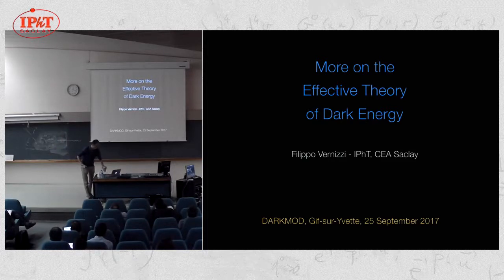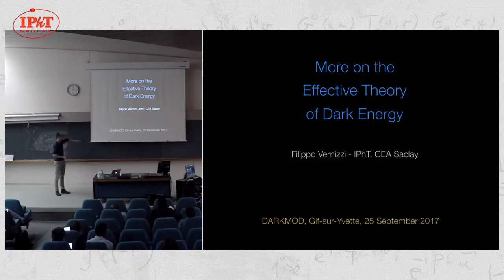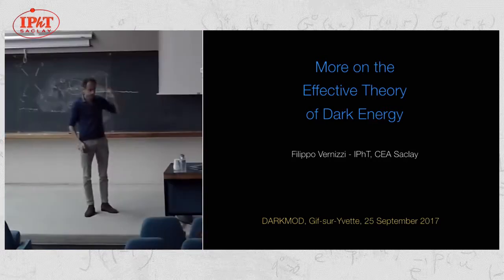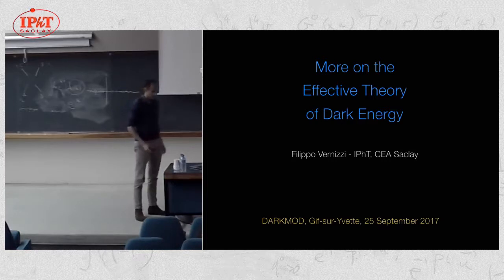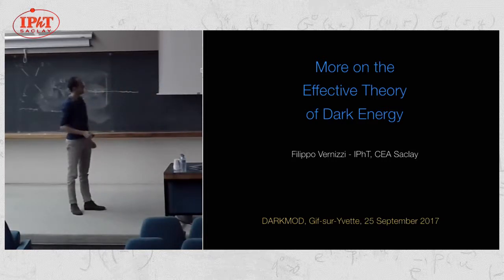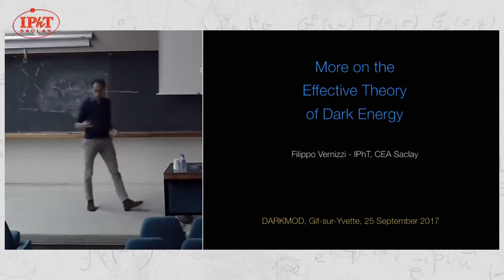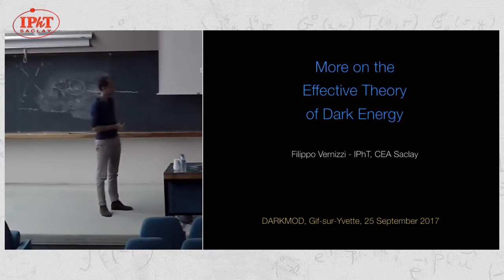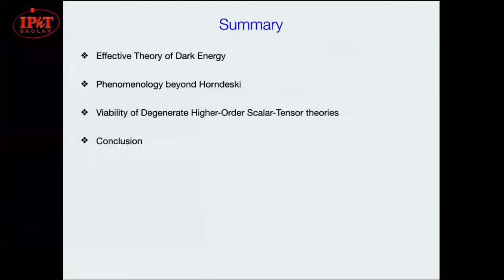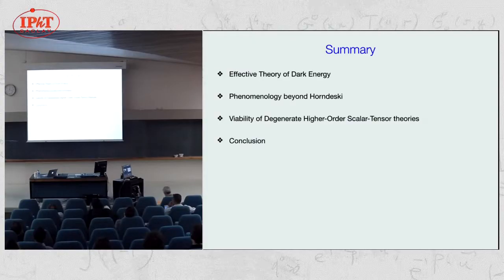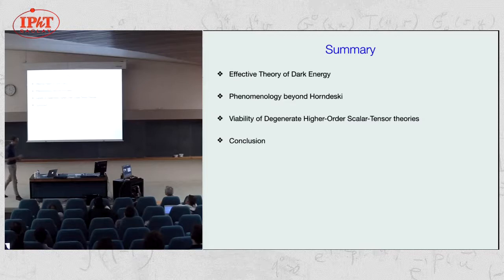Thank you to the organizers for the opportunity to speak. Last week I discussed a lot about the theory of dark energy in a series of lectures, so I thought I had exhausted all the arguments. However, there are people here today who weren't there last week, so I'll make a compromise. I'll start by reviewing the effective theory of dark energy, then discuss two topics I haven't touched much: the phenomenology of Beyond-Horndeski theories and the viability of degenerate higher-order scalar-tensor theories.